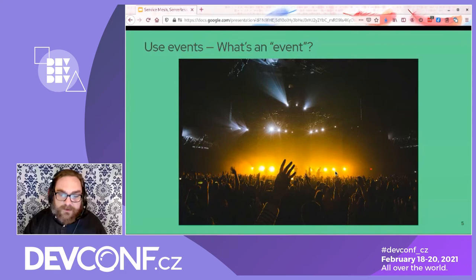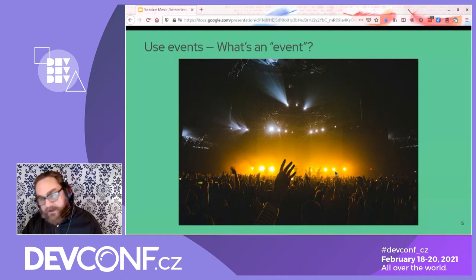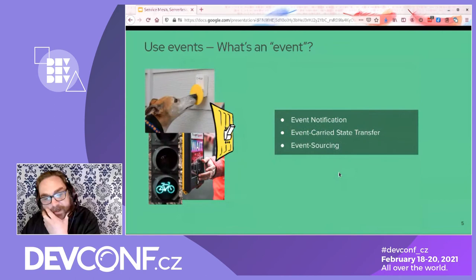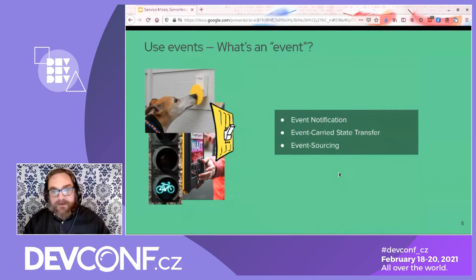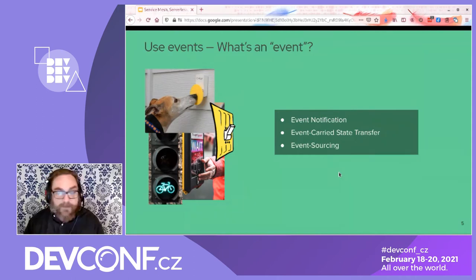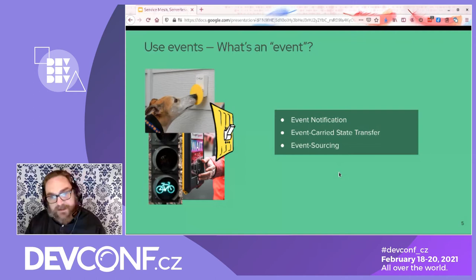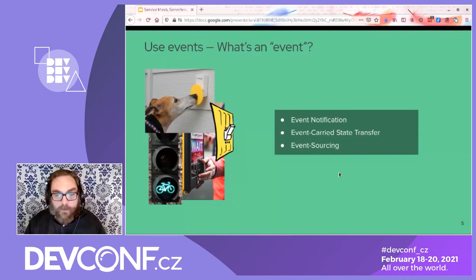So we can think about using events. First of all, what do we mean by an event? In technology there are actually some types. There's an event notification — kind of like a light switch — it's just the notification that this thing took place; it doesn't necessarily carry any information in the event itself. Then there's event-carried state transfer: this is the trigger, but it also carries all the information about the event. All the information you might need to process the event is carried in the event itself, but obviously the event itself is then a much bigger payload, so you need a different kind of channel to deliver it.